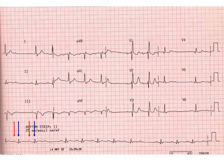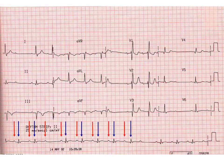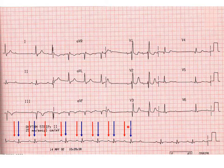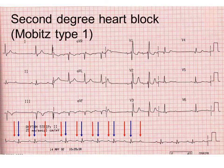In this ECG you can see that the PR interval changes and then there's a missed beat. If you look carefully you can see the PR interval lengthening with each beat. Just before the missed beat the PR interval is at its longest, and then there's a missed beat. This is second degree heart block because some beats are conducted and some aren't, and when you have a variable PR interval it's called Mobitz type 1.